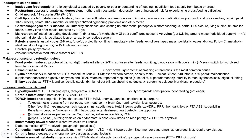Next is cytomegalovirus, another herpes virus. It can cause periventricular calcifications in the brain, visible on brain imaging. You diagnose CMV with urine and saliva — viral titers or PCR on those samples.